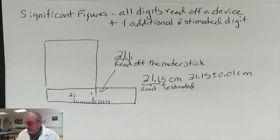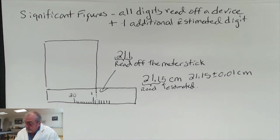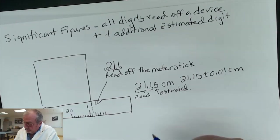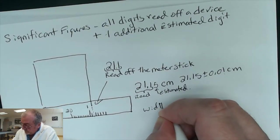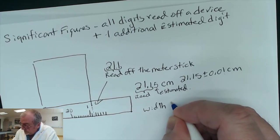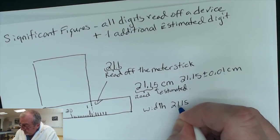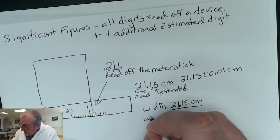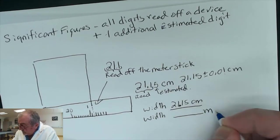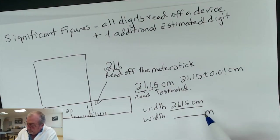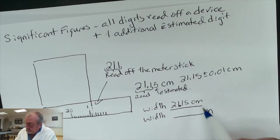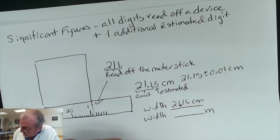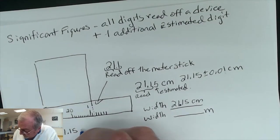For today's lab you're going to measure both length and width and record them to the correct number of significant figures. The width I just measured was 21.15 centimeters. The lab will also ask you to express that width in meters, so we have to convert centimeters to meters using dimensional analysis. Starting with 21.15 centimeters...